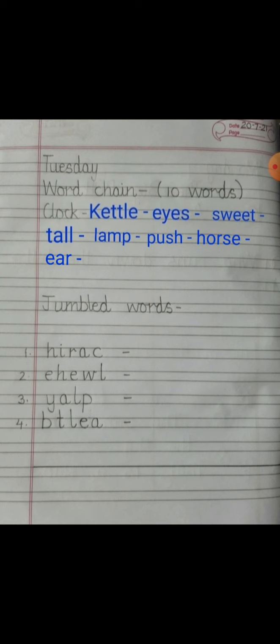So the next word is 'horse'. The word horse ends with the letter E, so the next word is 'ear'. The word ear ends with the letter R, so the next word starts with R — that is 'rain'. Write 'rain', and the last word starts with N, so write 'nest'. Put a full stop, leave one line, and write the next heading: 'Jumbled Words'.